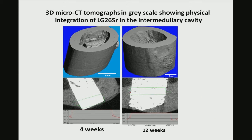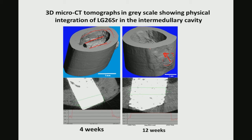This is a further view of the 3D micro-CT images of the glass ceramic materials — a grayscale image where you can see the medullary cavity and the outer shell. A section is cut and you can see that the implant is put inside and you can see the femoral defect from this angle.